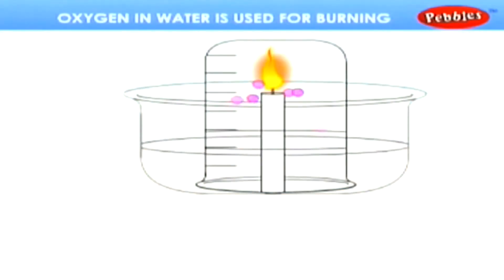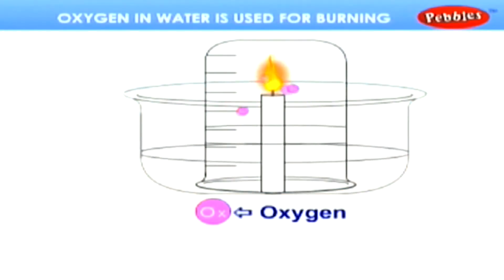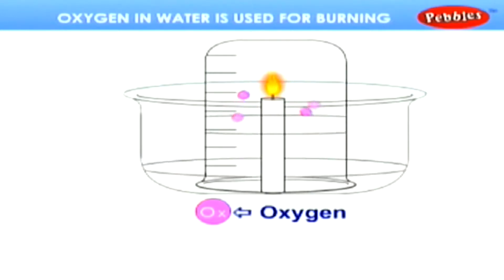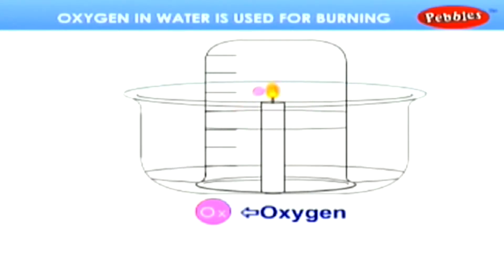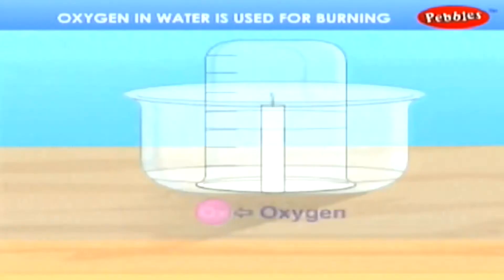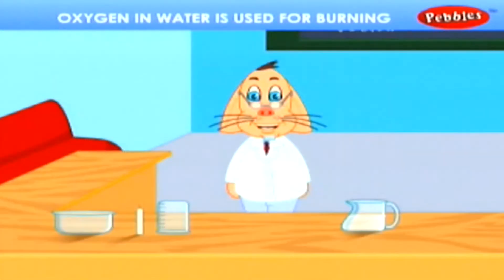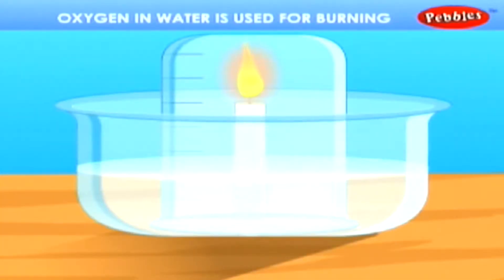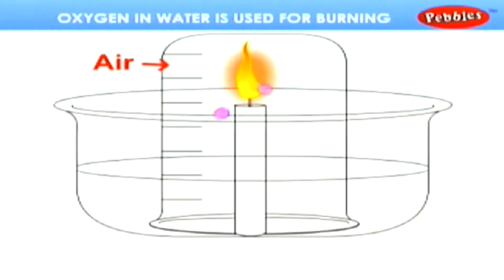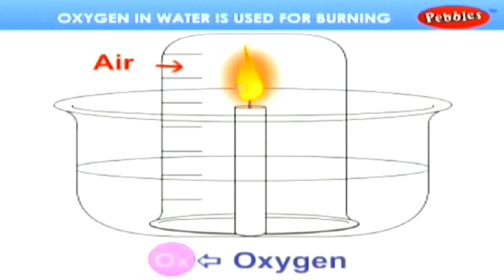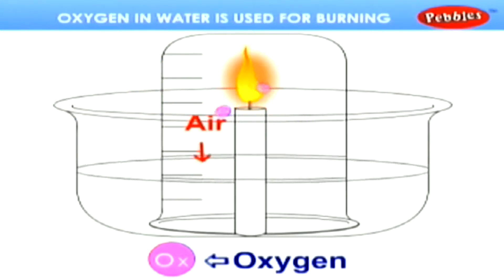Rising of the water level to mark one in the glass shows that one-fifth of the air in the glass is used up during burning. In this experiment, as we have closed the candle with a glass jar, the oxygen in the air inside the jar has been completely used. And then the candle utilizes the oxygen present in the water for burning.